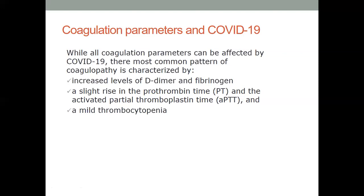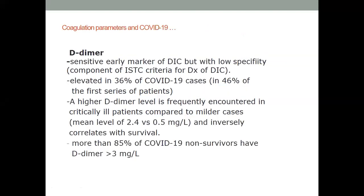There is mild thrombocytopenia. D-dimer comes out as the most important marker of disease severity. Certain cut-off points have shown ability to predict mortality, making it a sensitive early marker of DIC, though with low specificity. It is part of the ISTH diagnostic criteria for DIC and is elevated in up to 60 percent of COVID patients. More than 85 percent of COVID-19 non-survivors have D-dimer greater than 3 mg per liter.